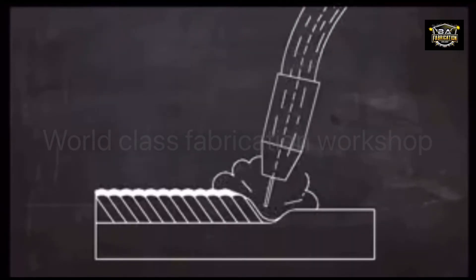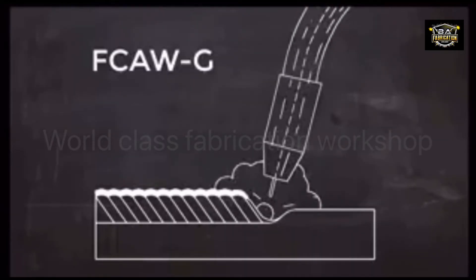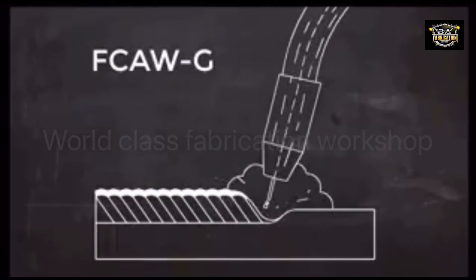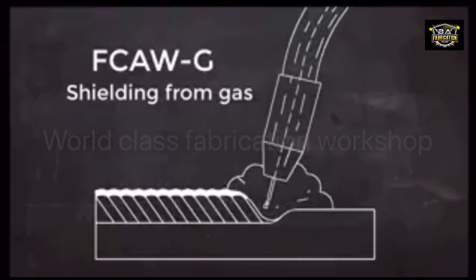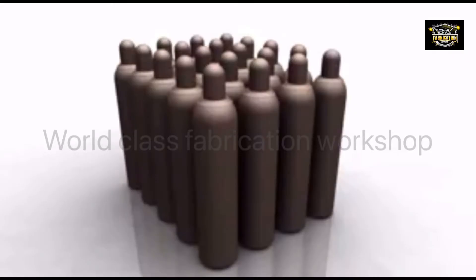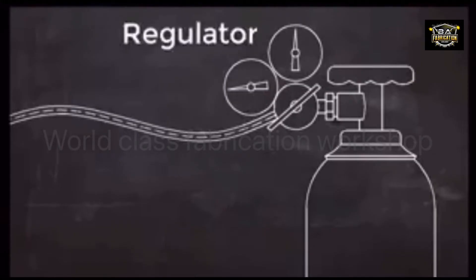Electrodes designed to be gas-shielded rely on a secondary shielding gas to do the job of protecting the molten weld. The high-pressure gas cylinders used for this process are of the same design as those used in MIG or TIG welding. These cylinders contain gas under extremely high pressure, and a device called a regulator brings the gas to a usable pressure.